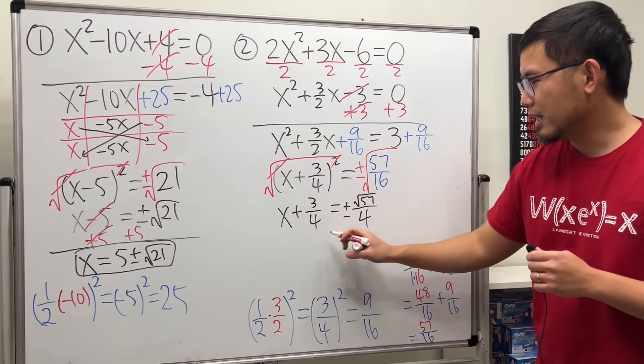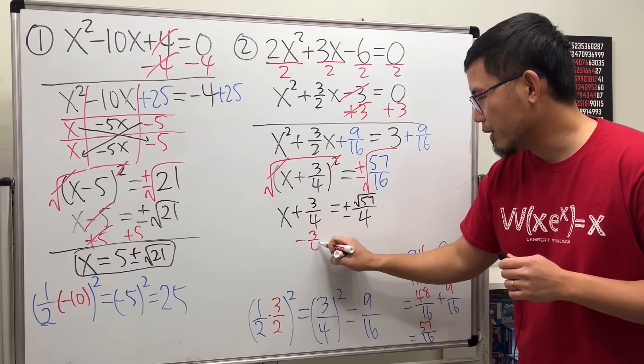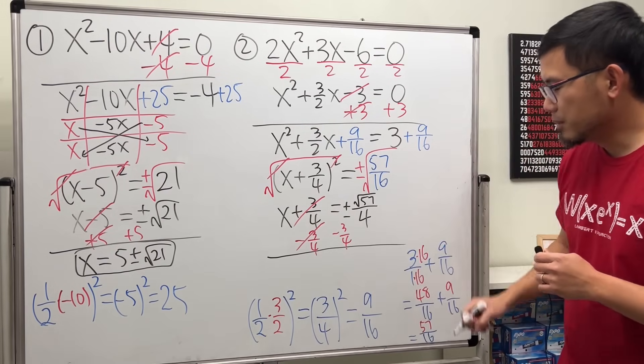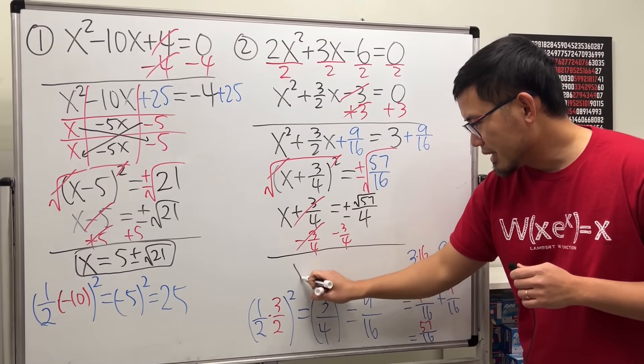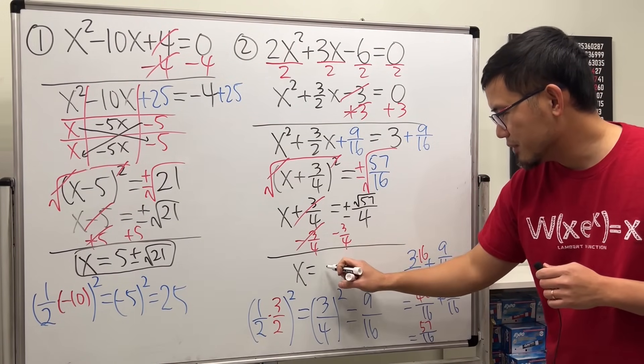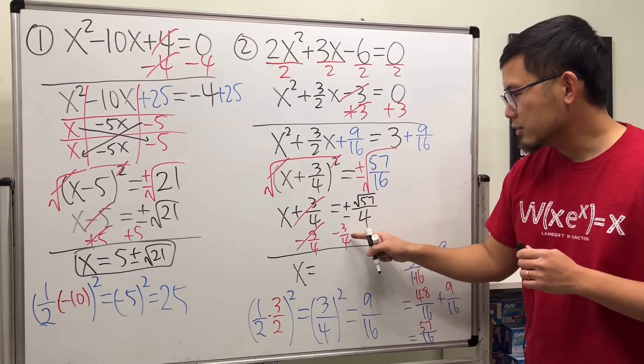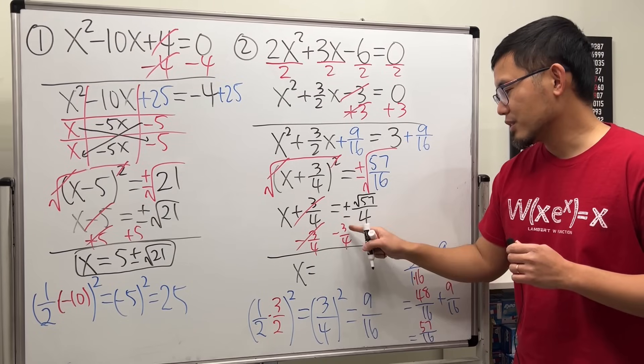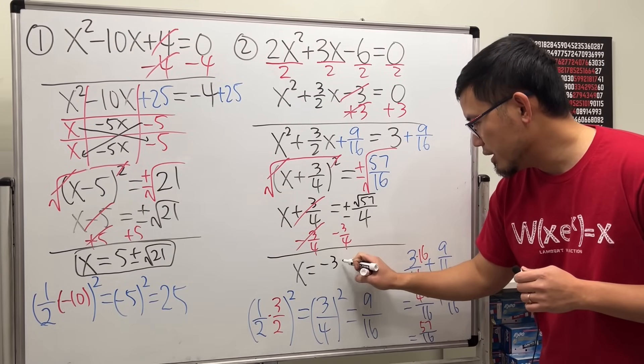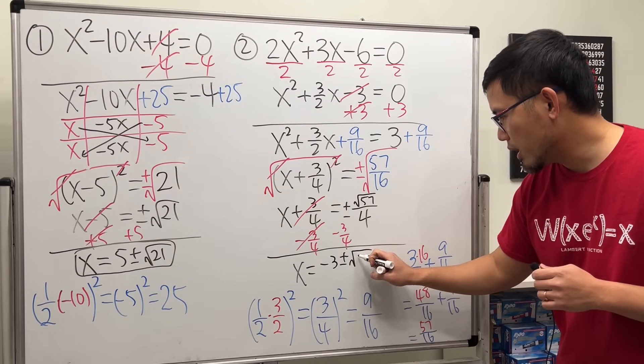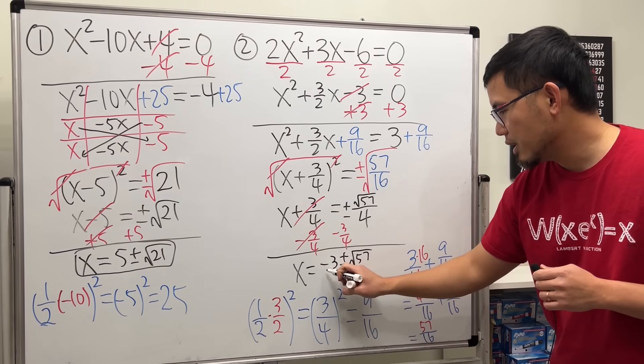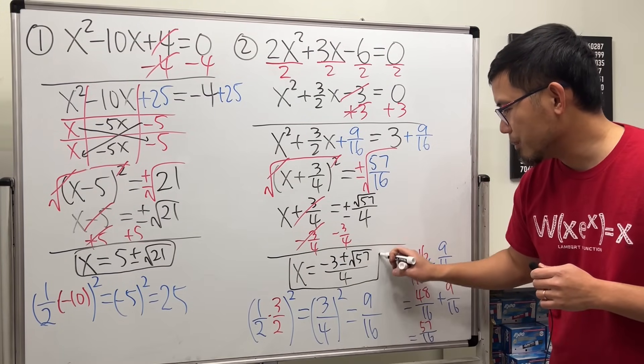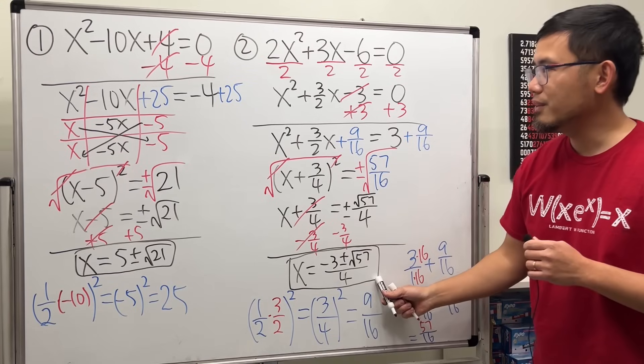Finally, bring this to the other side, so minus 3 over 4, cancel this. And ladies and gentlemen, x equals negative 3 over 4, plus or minus that. They have the same denominator, so let's put down negative 3, plus or minus like this, and then square root of 57, over 4. And that will be the answer for that.